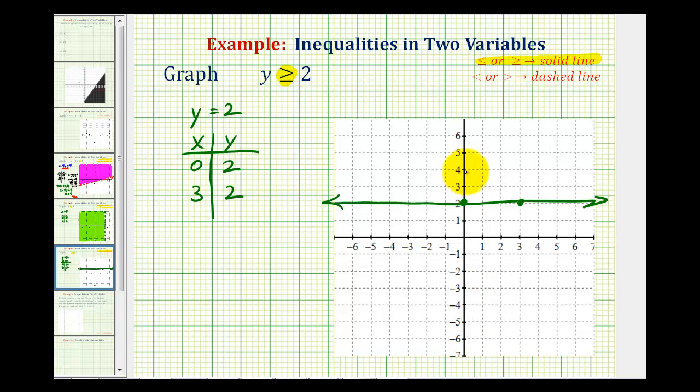To determine which half plane to shade, we should be able to interpret this by looking at the inequality. It says y is greater than or equal to 2. Well, y values are going to be greater than 2 above the line, because here's the y-axis. So we need to shade this entire region here.